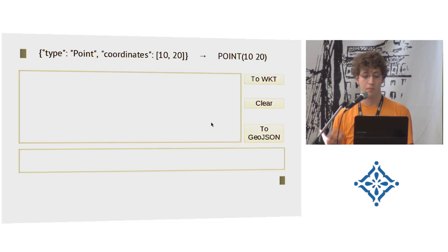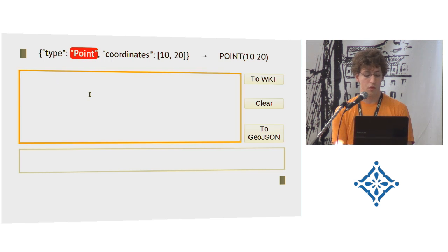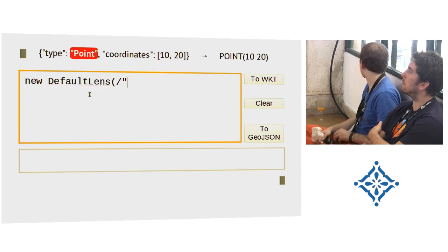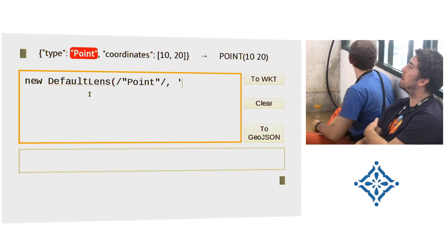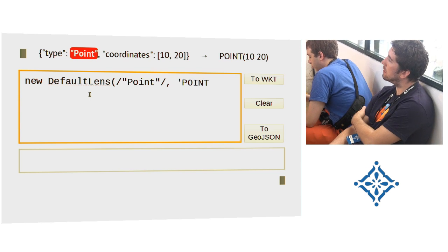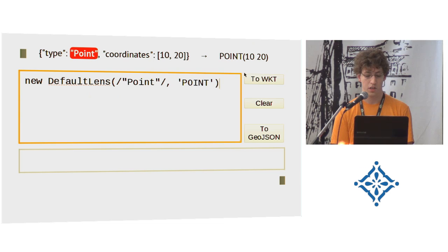I'll guide you through the example and just code so you can understand what it really looks like when you code such a transformation. So let's start with the point. We would need a default lens because we want to transform the point in quotes to an all uppercase point as a string. Let's see if it works. Now we just transform. I'm currently only transforming on this selected point above. It works.